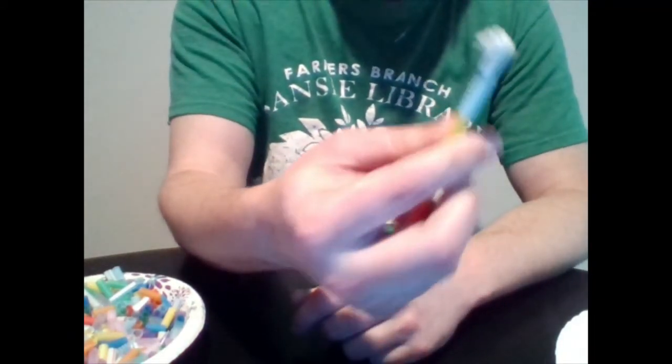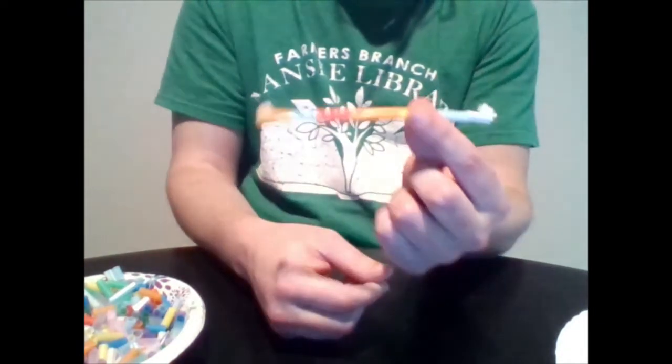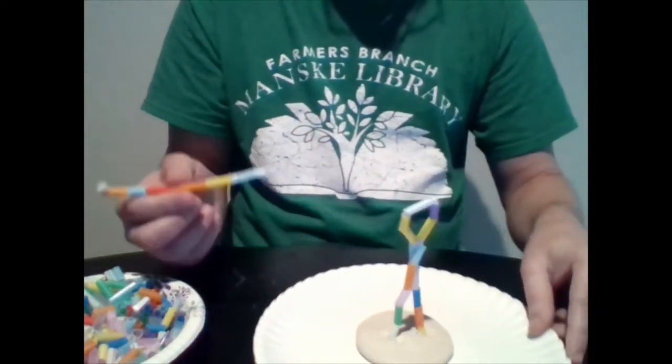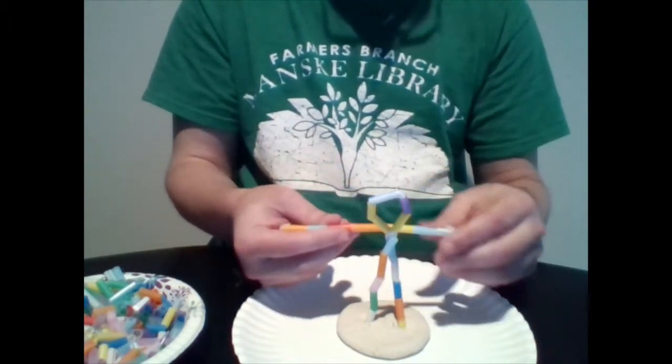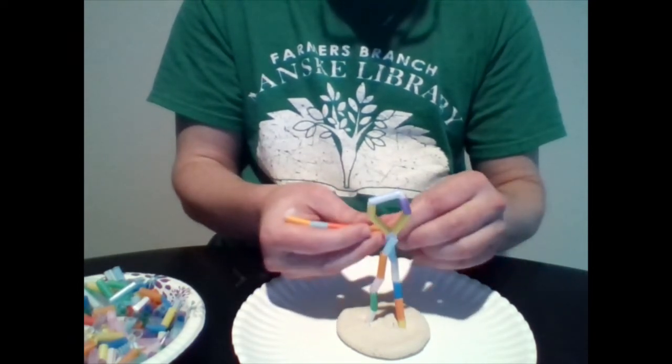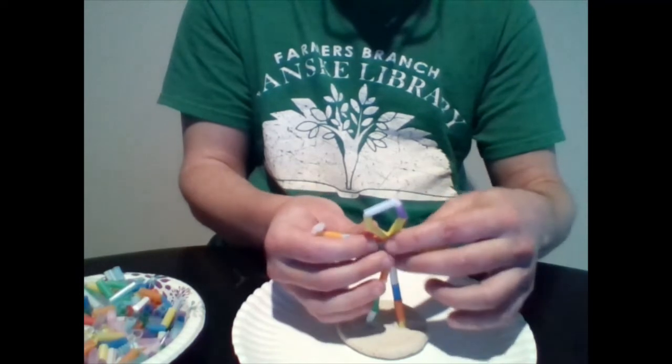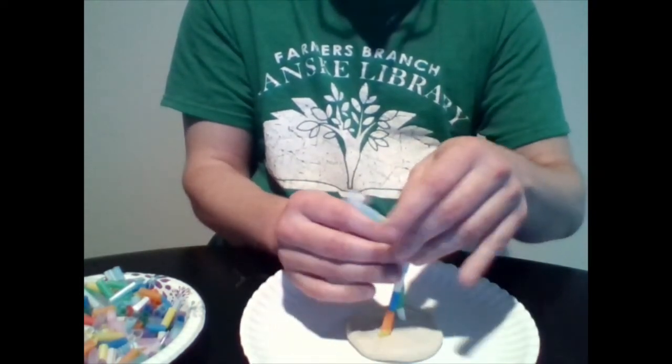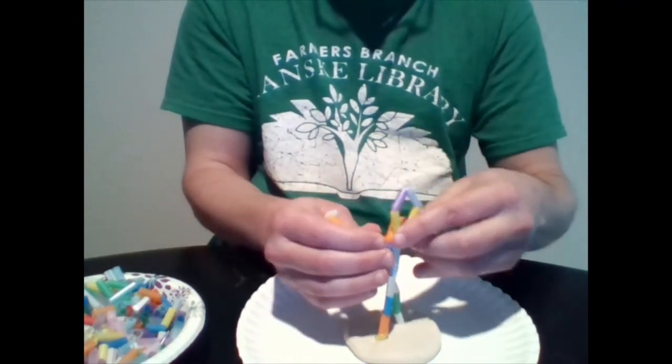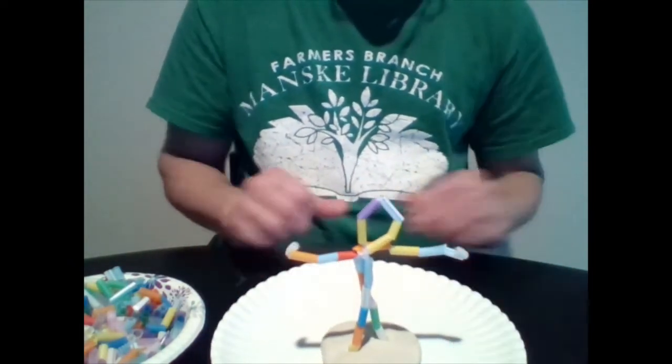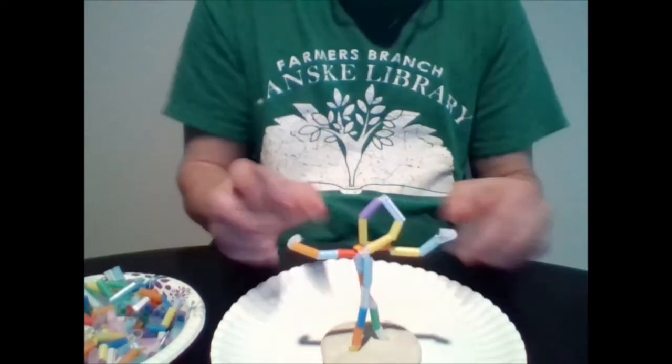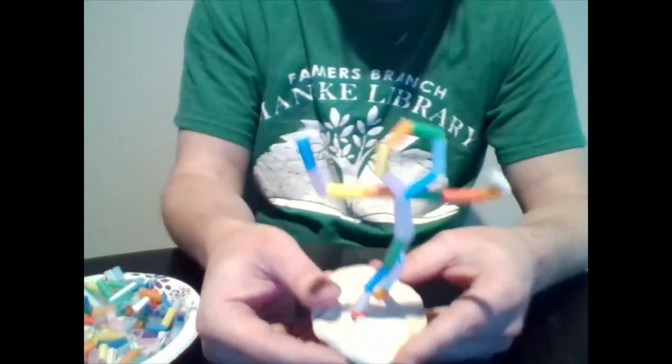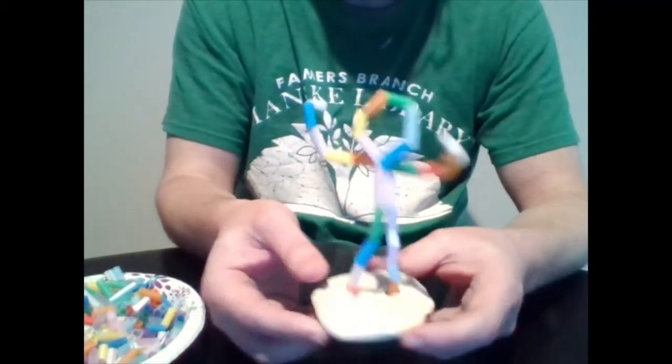Once you have your piece you can bend the other end like so. So you have your arm piece. Let's get our body back and you want to take your arm piece and bend it around the top part of the straw piece right below the little head. So that makes little arms.